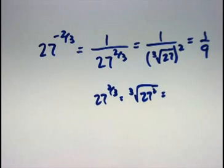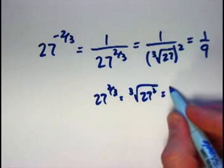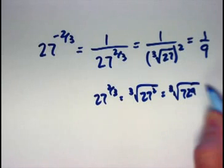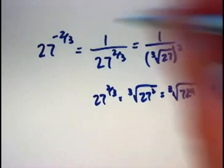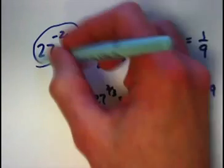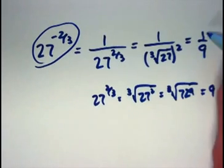You could also think of it, 27 to the 2 thirds power, as the cube root of 27 squared. 27 squared is 729. This is the cube root of 729, which you can check as 9. 9 times 9 times 9 is 729. Therefore, again, going back up here, the 27 to the negative 2 thirds power is 1 ninth.